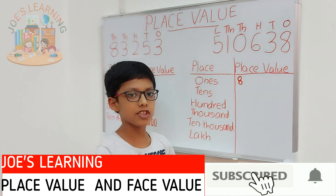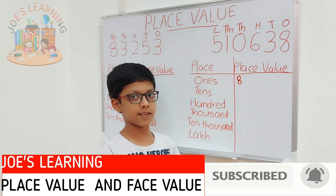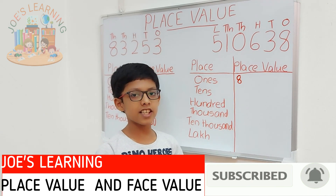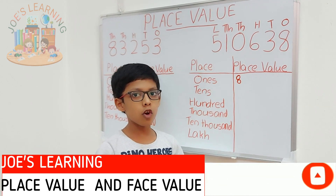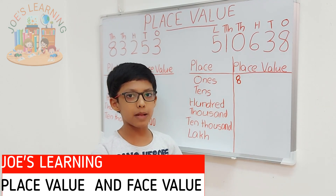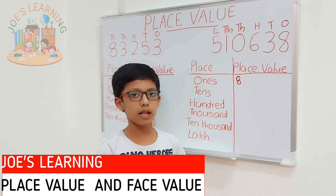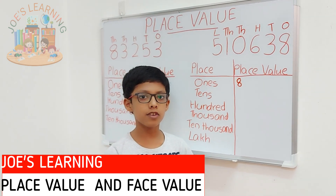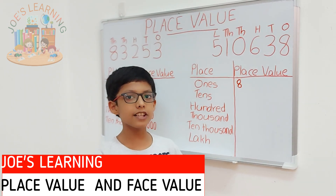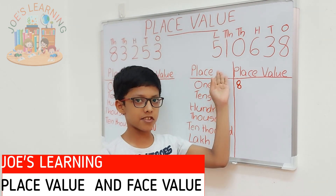Now, let's take a look at the tens place. 3 is in the tens place. So, we have to multiply it by 10. 3 multiplied by 10 is 30. So, that's the place value of 3 in this number.